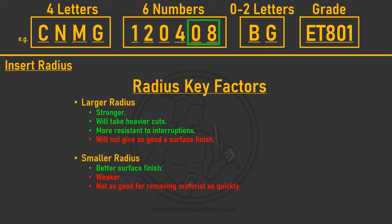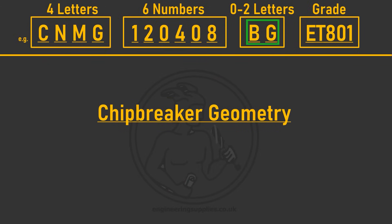When picking a radius, consider two factors. The bigger the radius, the stronger the cutting point, which allows a heavier cut and is more resistant to breaking during interrupted cuts. However, a large radius does not produce as high a quality surface finish. Small radiuses produce exceptional surface finishes but are not as strong and require more passes to remove large amounts of material. Most machinists select a 0.8 radius as a happy medium between strength and surface quality.